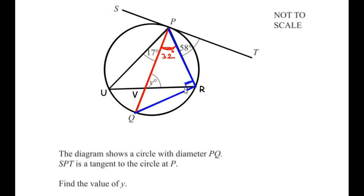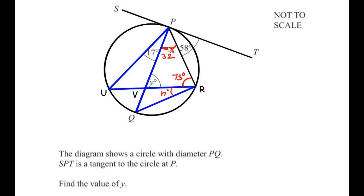Next, we use the angles in the same segment theorem. Consider points U and Q — these two points divide the entire circle into a minor segment and a major segment. These two points make an angle at point P and the same two points make an angle at point R in the major segment, which means if angle P is 17 degrees, then angle R is also 17 degrees. Since the total angle R is 90 degrees, we can find angle PRV: 90 minus 17 gives us 73 degrees.